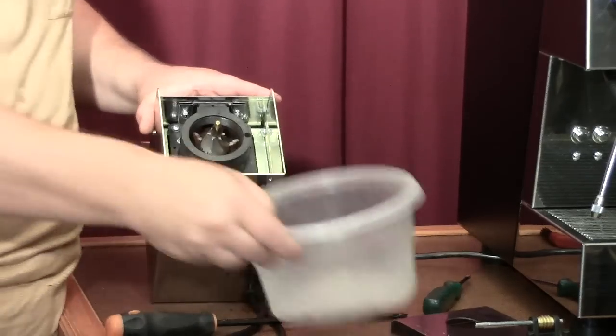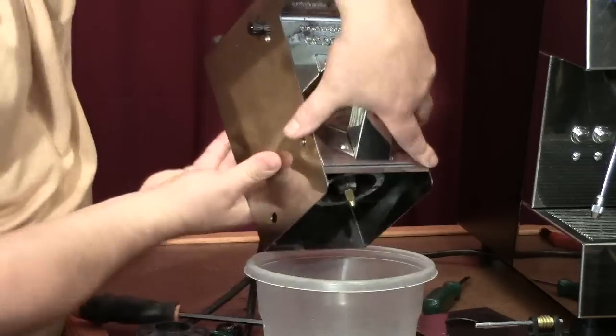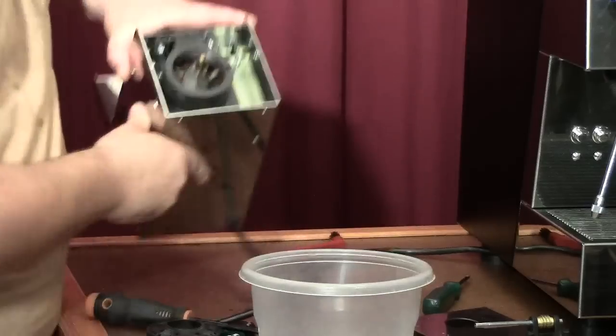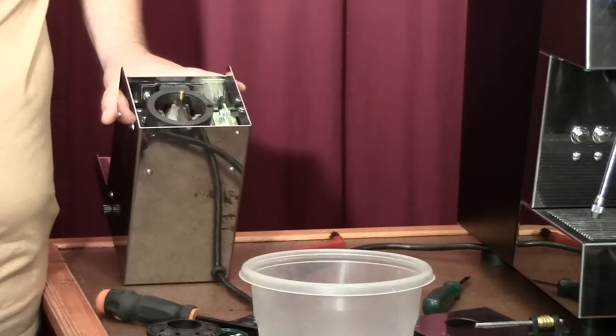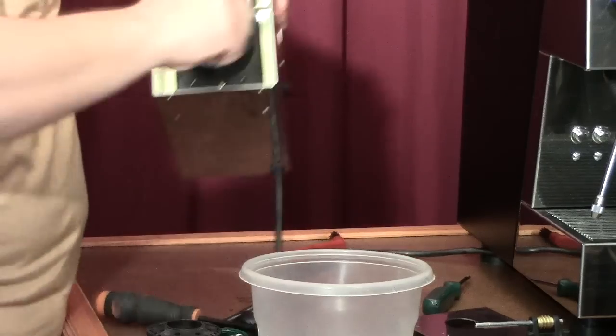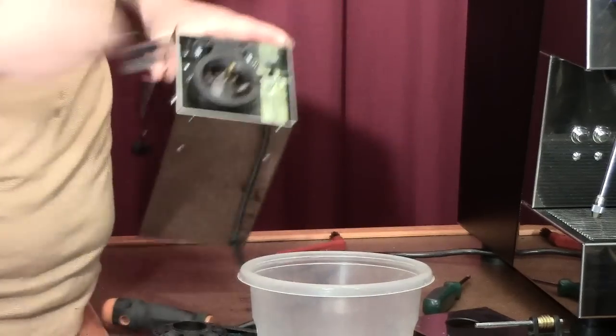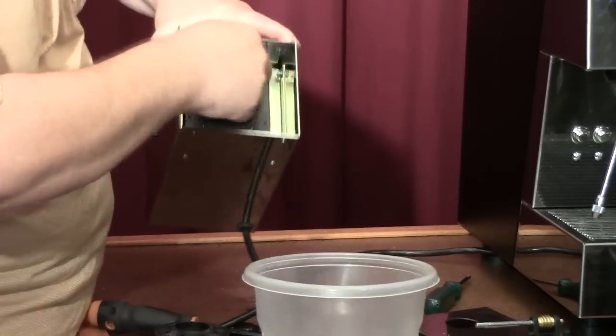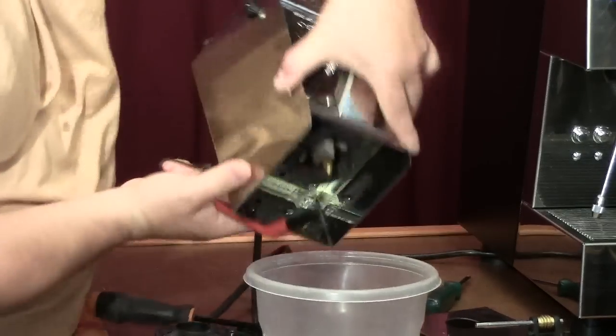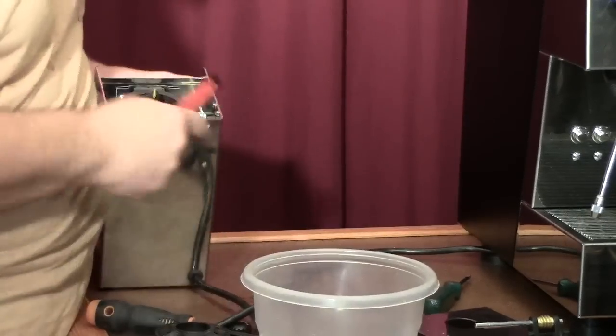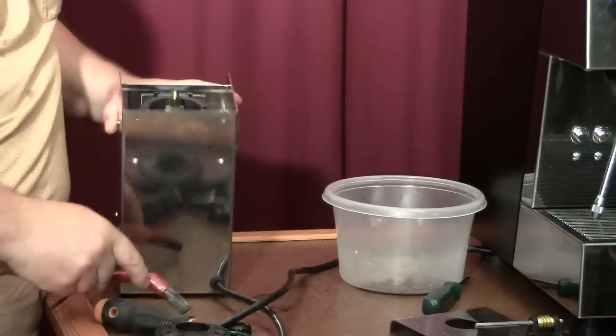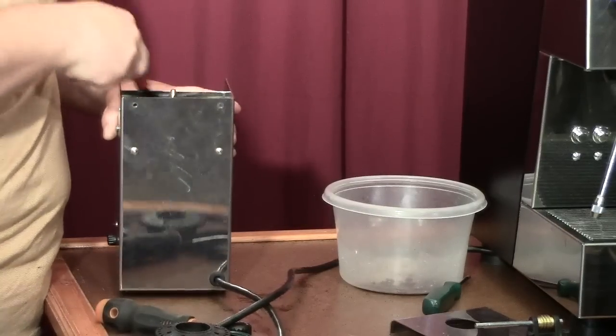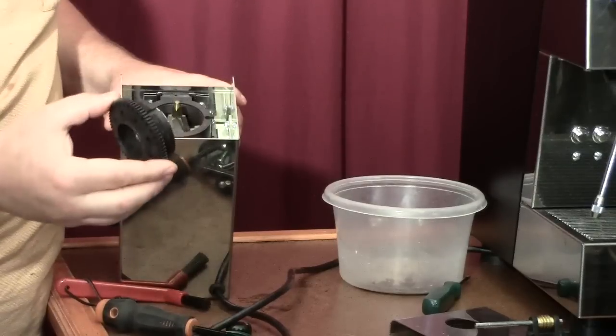Turn it counterclockwise until you get it out. Once you get it out, get a container and twist it and dump all the coffee out. Get a little brush if you have one and brush everything out. Make sure the chute is clean.